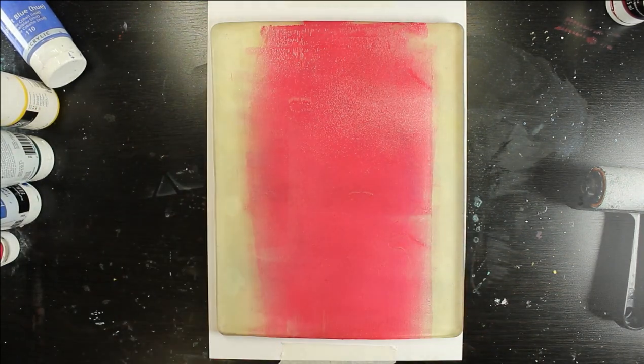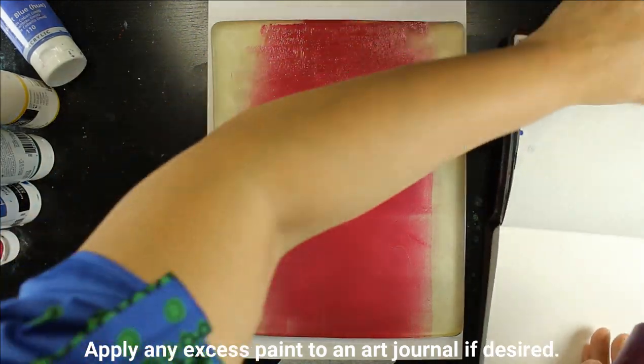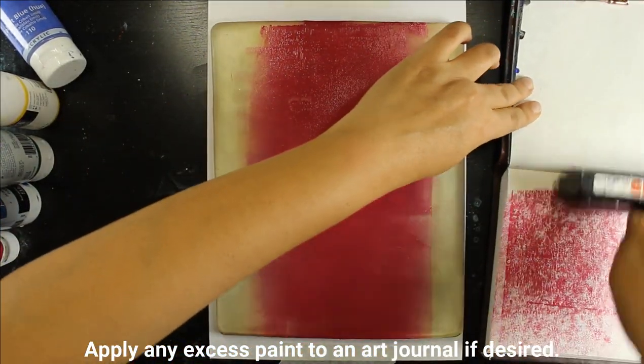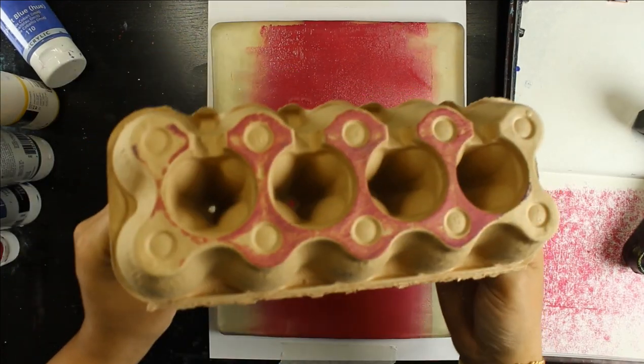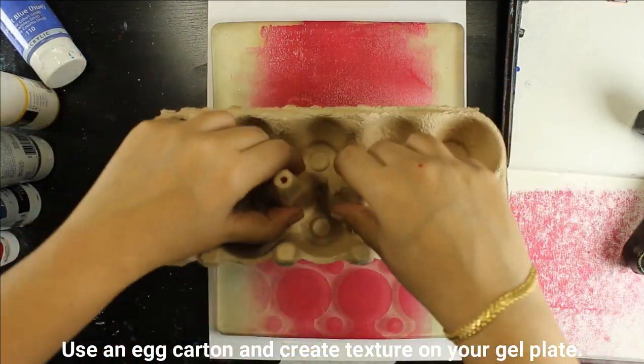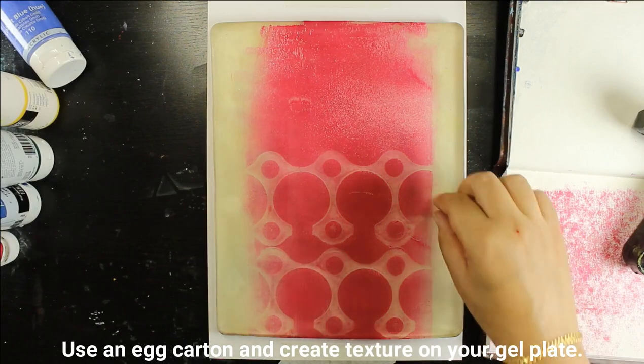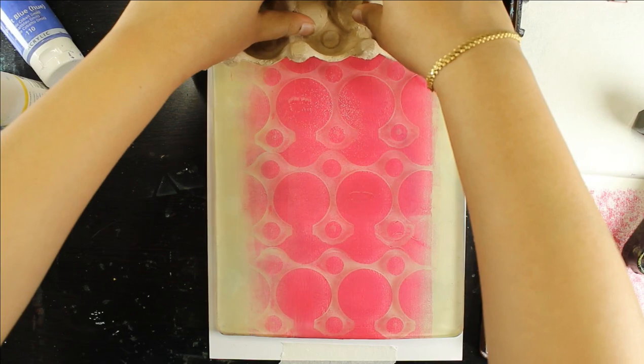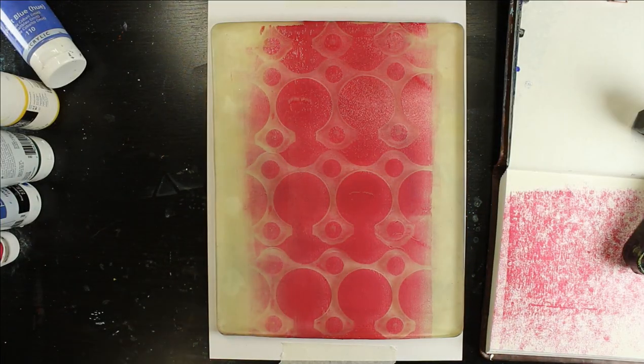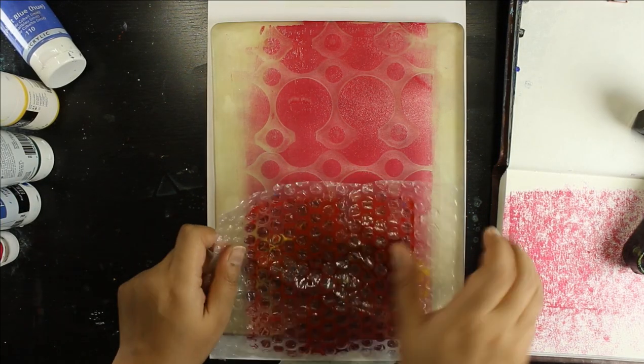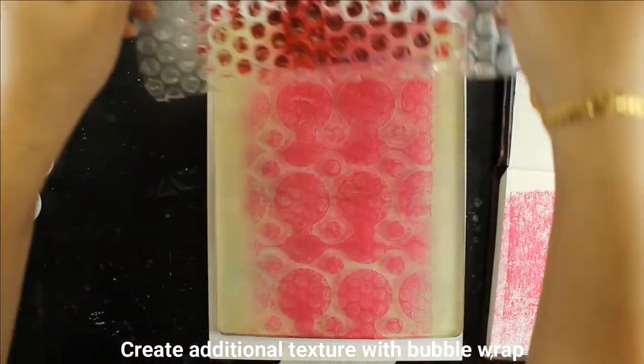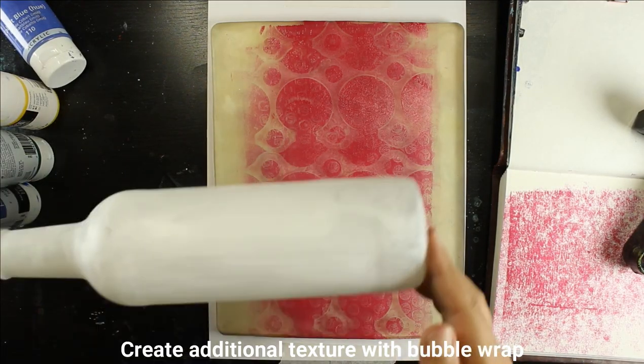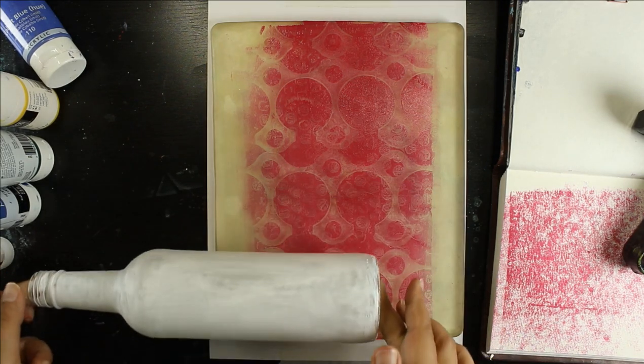So I'm taking some magenta paint and I'm braying out with my roller a thin layer of paint onto the gel plate and I'm wiping off any excess onto my art journal which I've got on the side. I'm using a good old egg carton to get some texture onto my gel plate and I am adding some more texture with some bubble wrap.